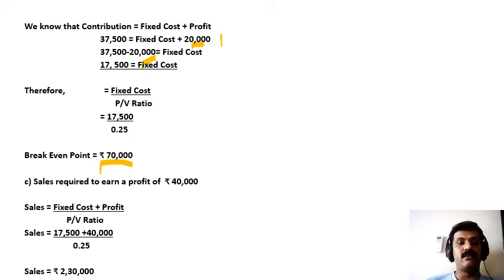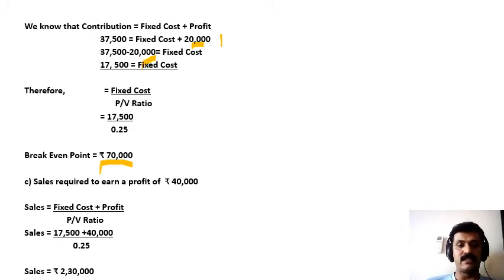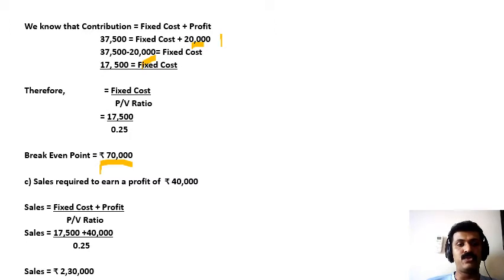Now the next component we have to calculate is sales required to earn a profit of rupees 40,000. The desired sales formula is fixed cost plus desired profit, divided by PV ratio. We know fixed cost is 17,500 and desired profit is 40,000. So sales equals 17,500 plus 40,000, which is 57,500 divided by 0.25. We get the value of sales as rupees 2,30,000.